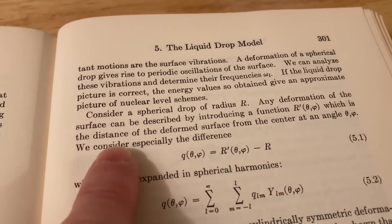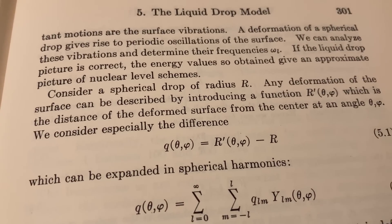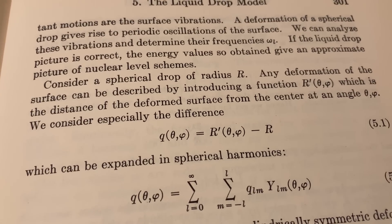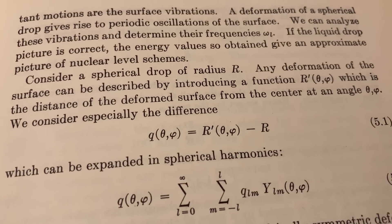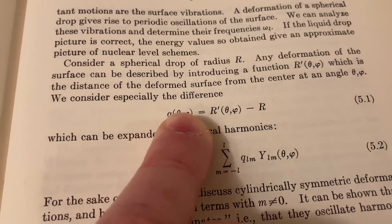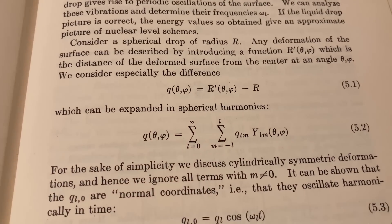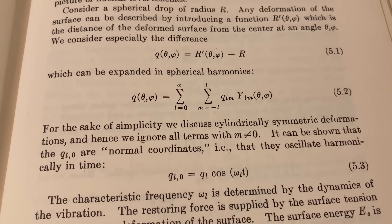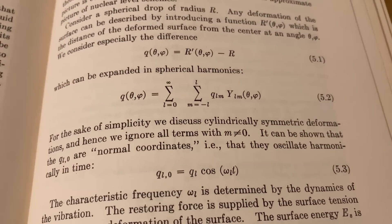It looks like he was reading this page too. This is on the liquid drop model. Consider a spherical drop of radius r. Any deformation of the surface can be described by introducing a function, r prime of theta phi, which is the distance of the deformed surface from the center at an angle theta phi. We consider especially the difference, which can be expanded in spherical harmonics. For the sake of simplicity, we discuss cylindrically symmetric deformations. Hence, we ignore all terms with m not equal to zero. Sounds like some pretty heavy physics stuff.